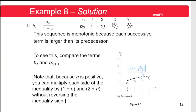If n = 3, then b₃ = 2(3)/(1 + 3) = 6/4 = 3/2. If n = 4, then b₄ = 2(4)/(1 + 4) = 8/5. As you can see, b₁ < b₂ < b₃ < b₄, so we can conclude this is a monotonic sequence because each successive term is larger than its predecessor.